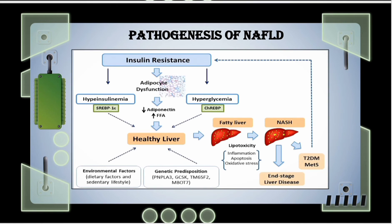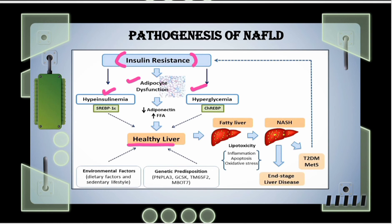Here in this picture, we can see how the NAFLD-like condition can lead to the development of insulin resistance, which can cause hyperinsulinemia, adipocyte dysfunction, and hyperglycemia, and ultimately how this healthy liver can progress towards fatty liver development, then NASH, and ultimately towards end-stage liver disease.